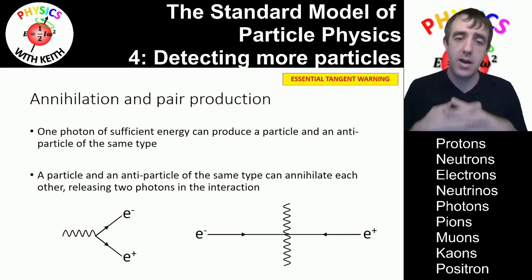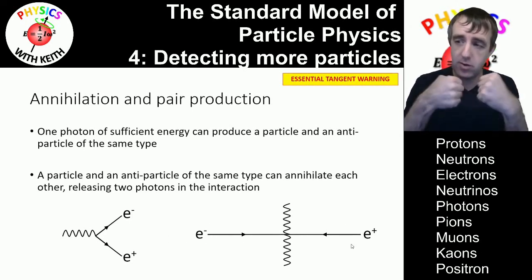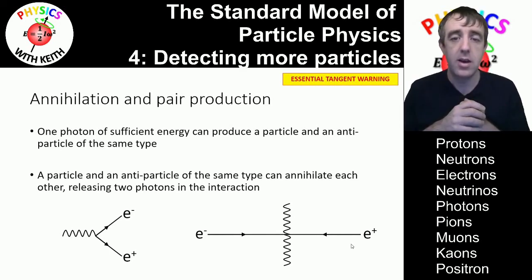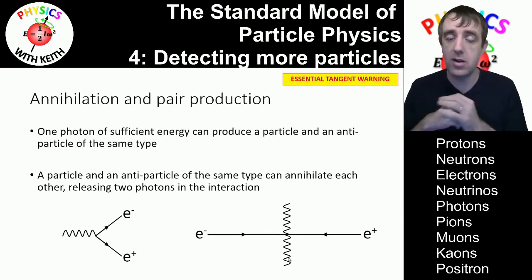Now, annihilation happens when matter and antimatter interact. When an electron and a positron interact, come close enough to each other that they can interact, they will annihilate each other. All the mass that they contain gets turned into energy. Remember, the equation was E equals mc squared. That tells you how much energy you get out. And that energy forms two identical photons travelling in opposite directions.